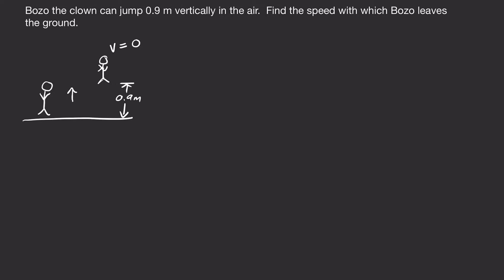Conservation of energy says that the total energy that we start with must equal the total energy that we end with. So initial total energy equals final total energy. And our energy could be in the form of kinetic energy or potential energy.